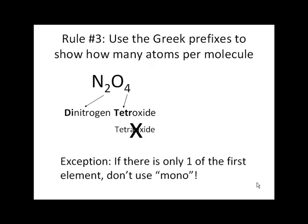Now, there is one exception. If there's only one of the first element in the compound, you don't put the mono before it. Take CO2, for example. The name of CO2 is carbon dioxide. One carbon, two oxygens, carbon dioxide. We don't call it monocarbon dioxide.